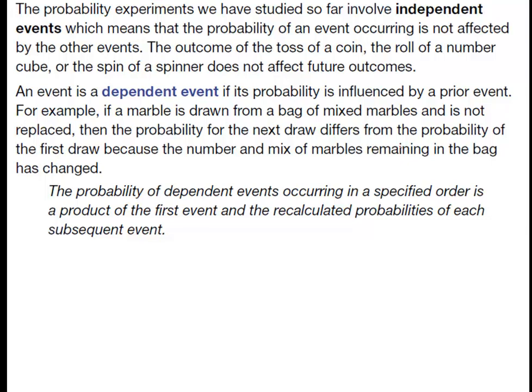The definition is: the probability of a dependent event occurring in a specified order is a product of the first event and the recalculated probabilities of each event to follow.